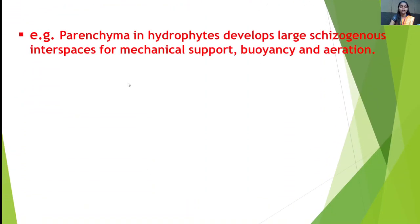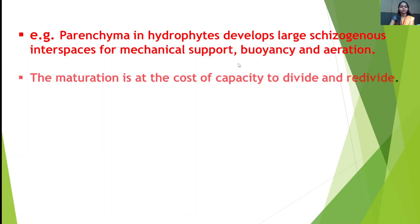An example is parenchyma in hydrophytes, which develops large cysogenous interspaces for mechanical support and aeration. The maturation occurs at the cost of the cell's capacity to divide and re-divide.